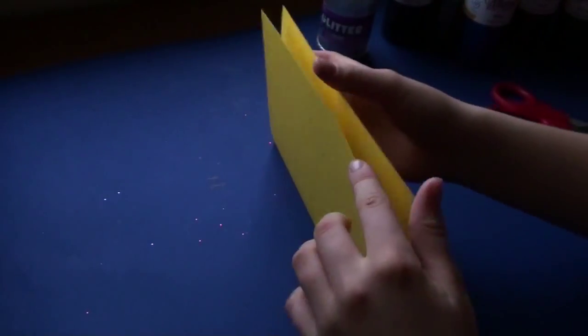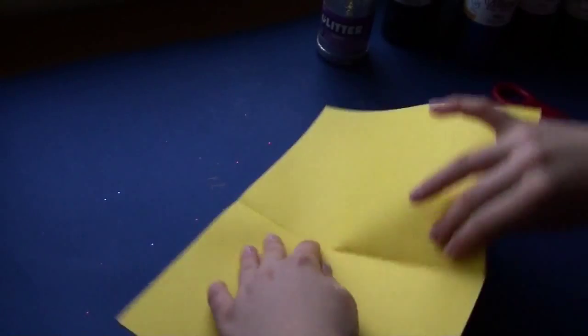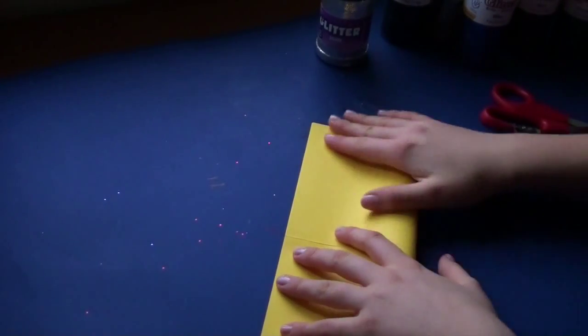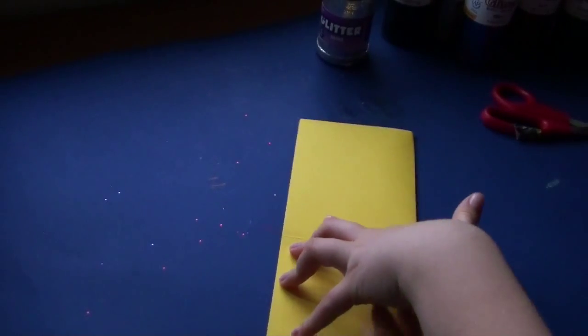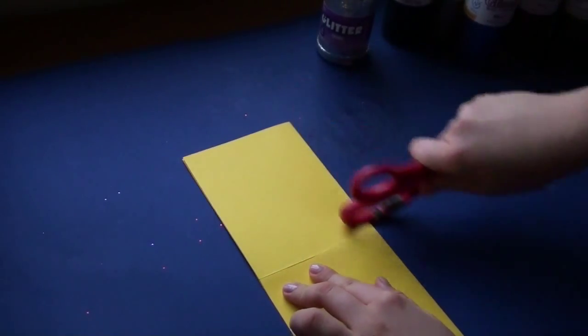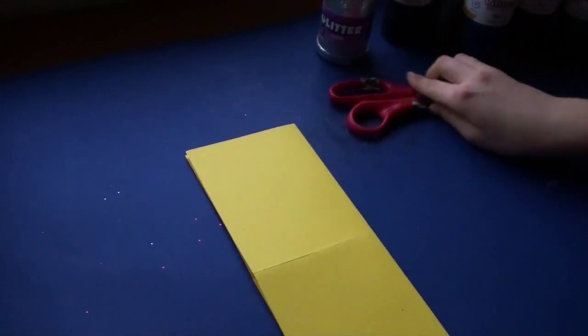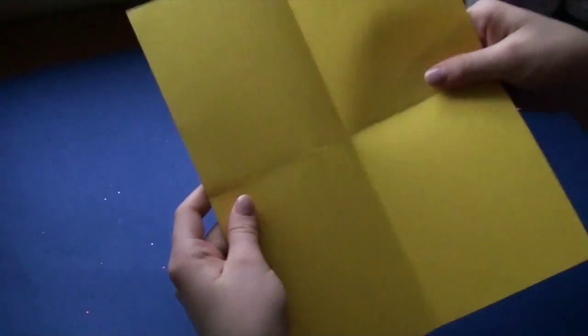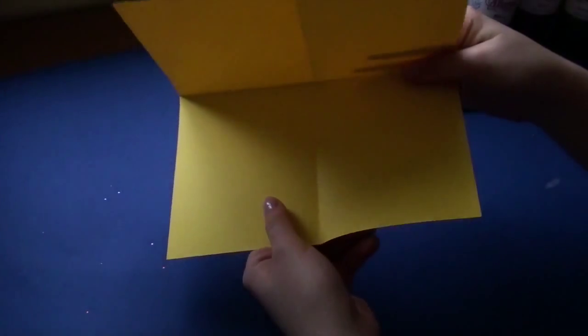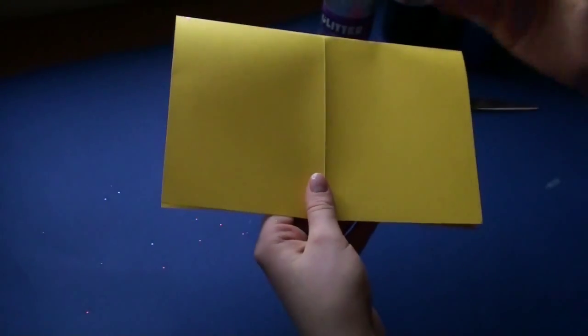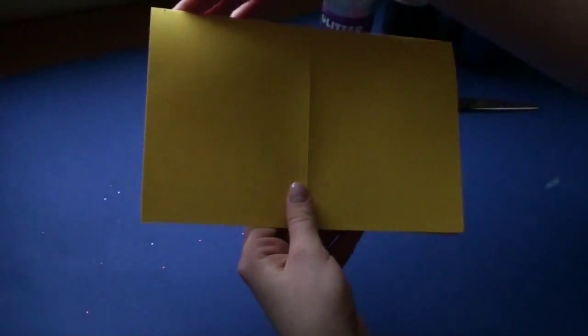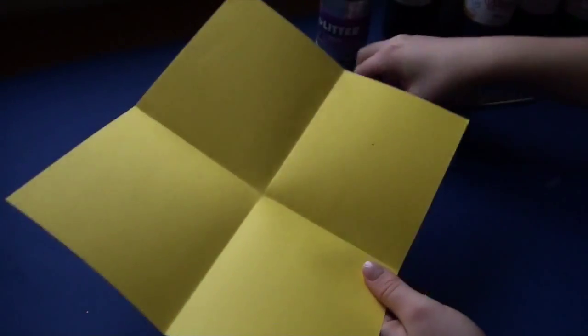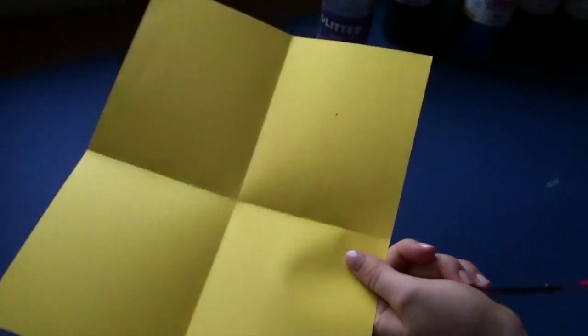Open it and crease it in half the other way. Now you would have it like this. Fold it like that. And you have this line here, this one right there. So open it up and cut it on the line.